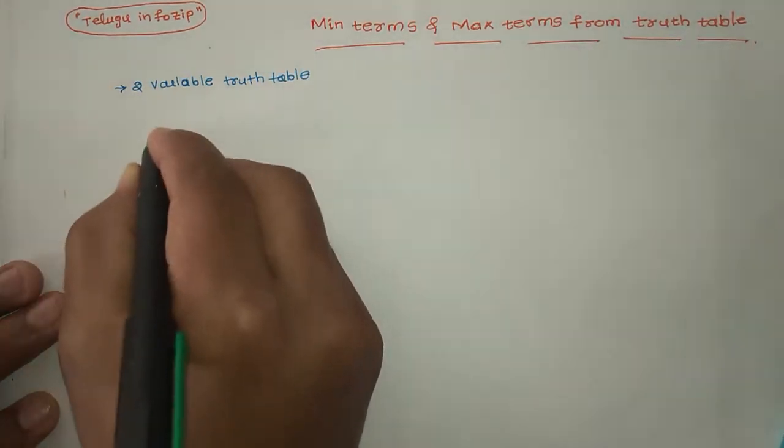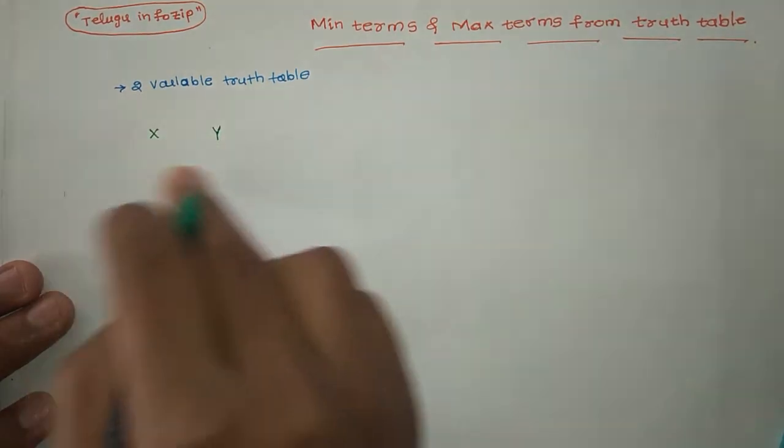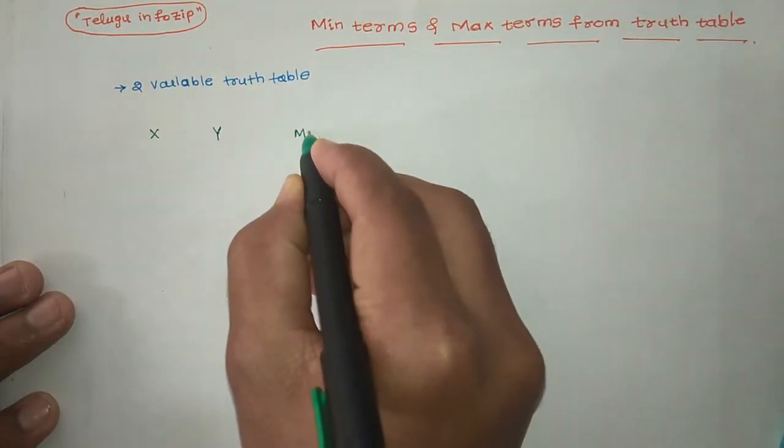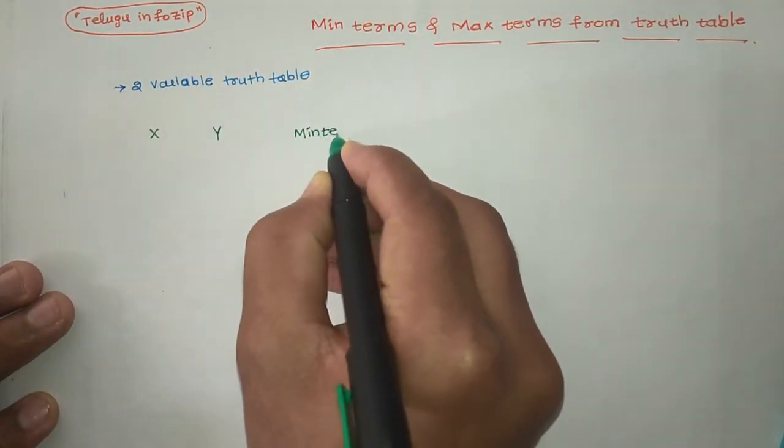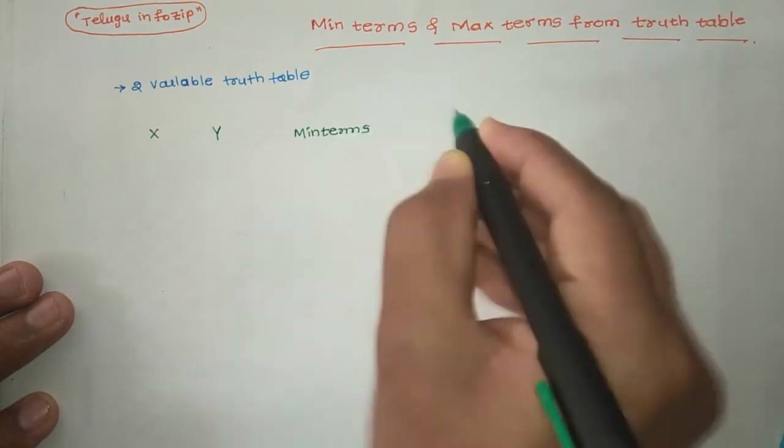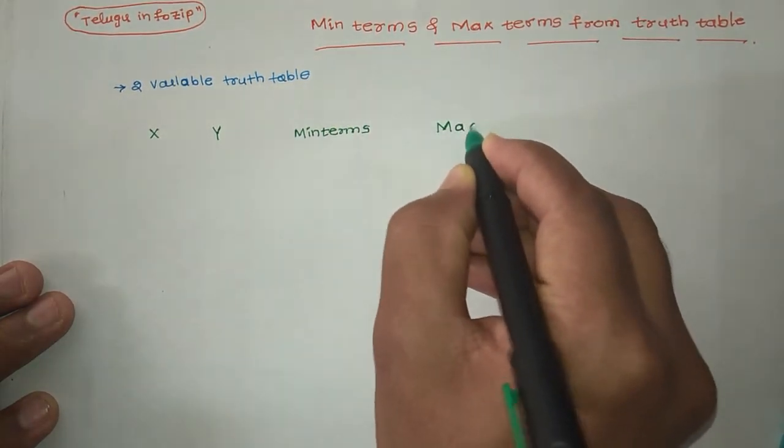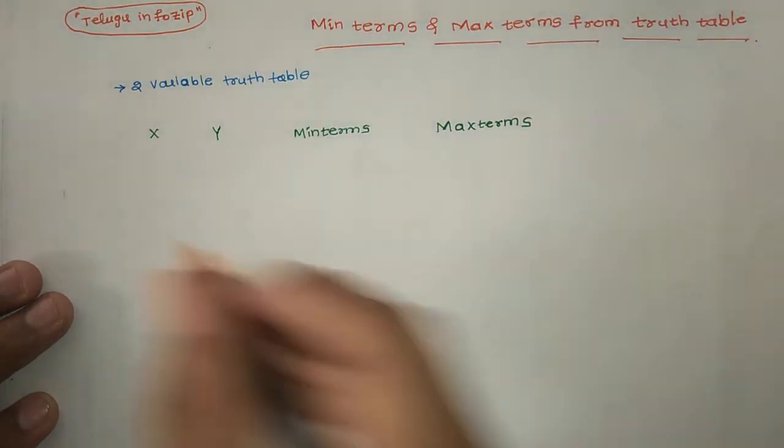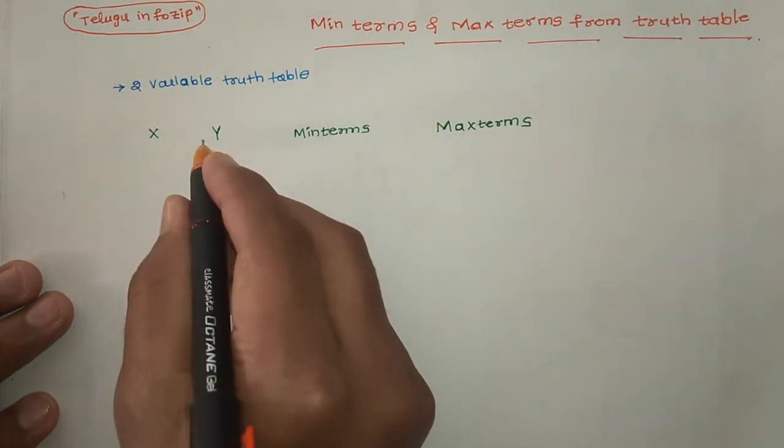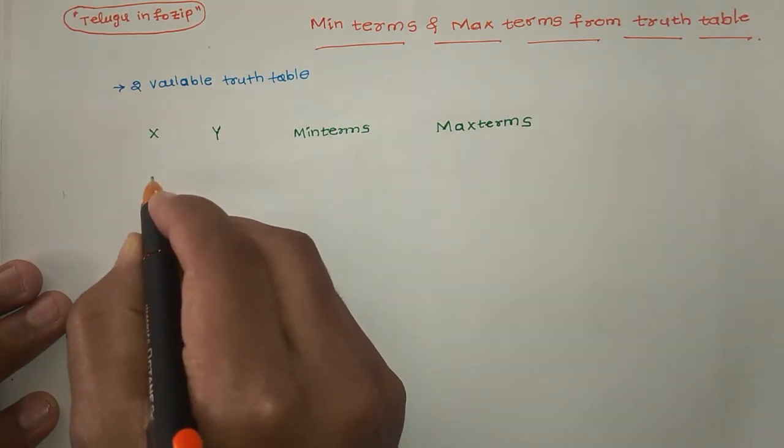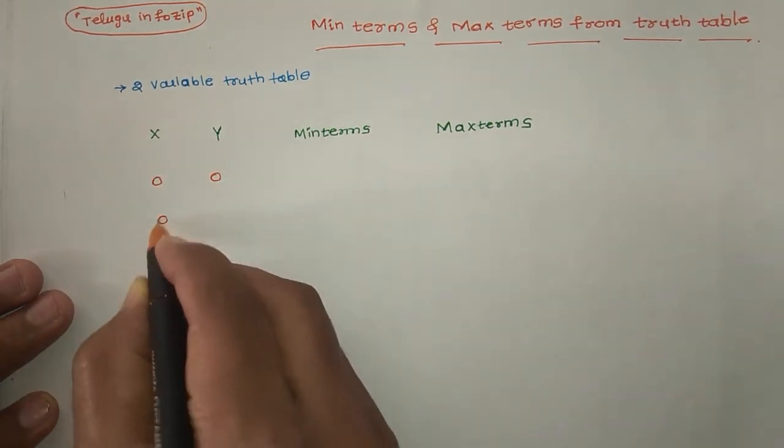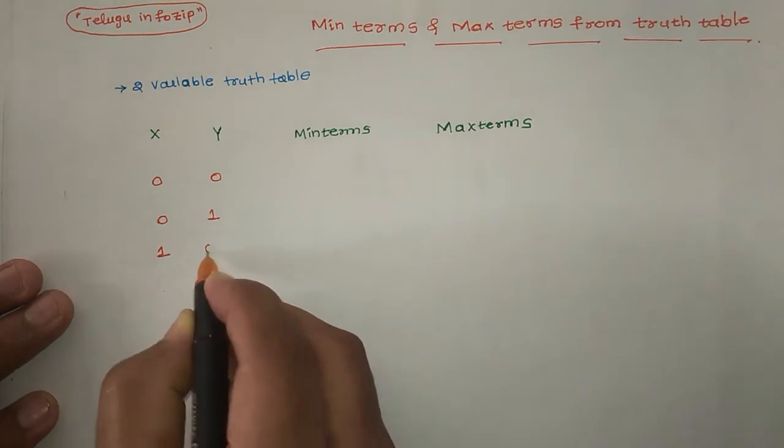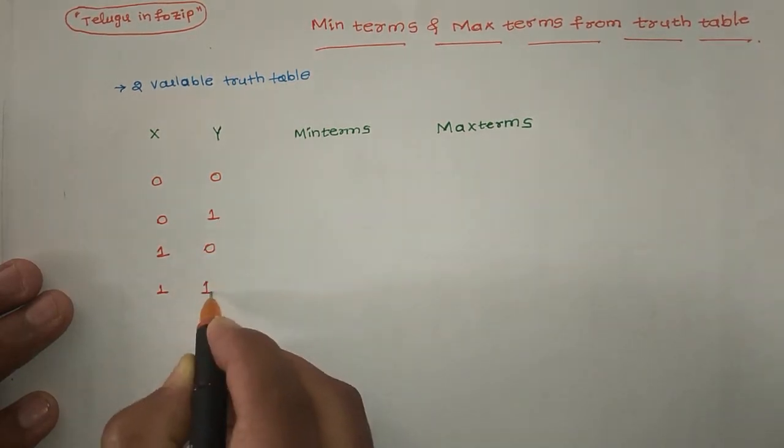So X and Y are my two variables and min terms and max terms formation. So let the terms: X, Y. The total number of combinations is 2^n, that is four. Zero zero, zero one, one zero, one one.